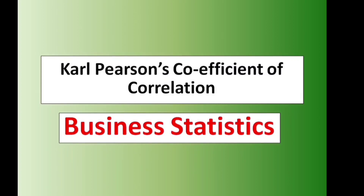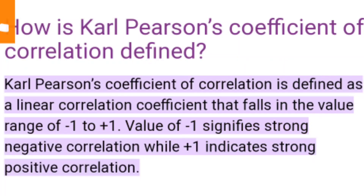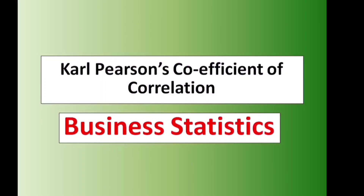Karl Pearson's Coefficient of Correlation is defined as a linear correlation coefficient that falls in the value range of minus 1 to plus 1. A value of minus 1 signifies strong negative correlation, while plus 1 indicates strong positive correlation. We will also talk about the assumptions: level of measurement, related pairs, absence of outliers, and linearity.